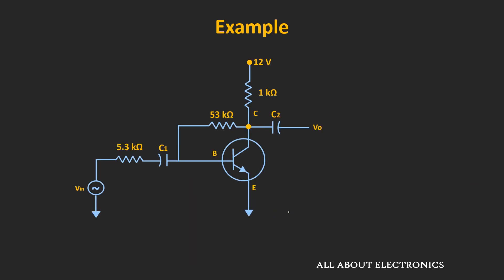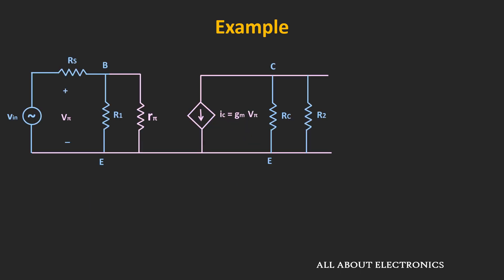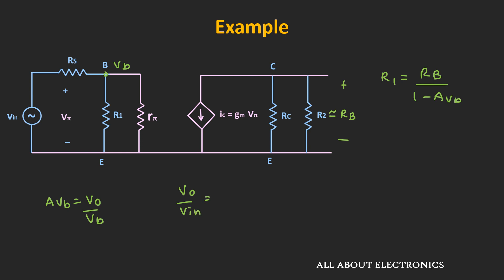Once we have the transconductance, let's do the small signal analysis to find the voltage gain. In the small signal equivalent circuit, Rs is the series resistance of 5.3 kΩ and RC = 1 kΩ. R2 is approximately equal to RB, and R1 = RB / (1−Avb), where Avb is the ratio of output voltage to the voltage at the base terminal, Avb = Vout/Vb. Because of the series resistor Rs, Vin and Vb are not equal, so the overall gain Vout/Vin = (Vout/Vb) × (Vb/Vin).